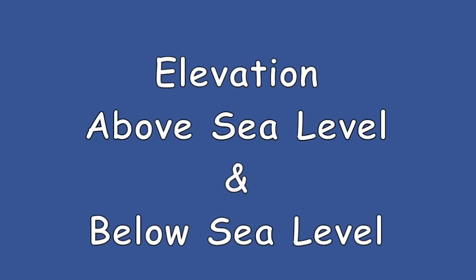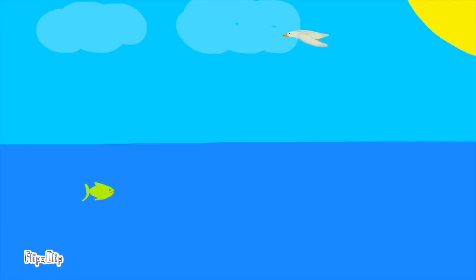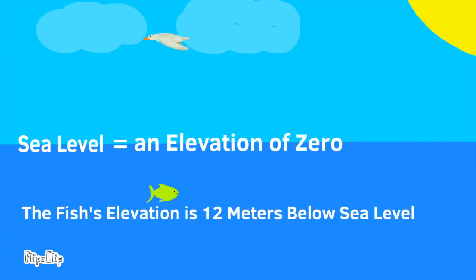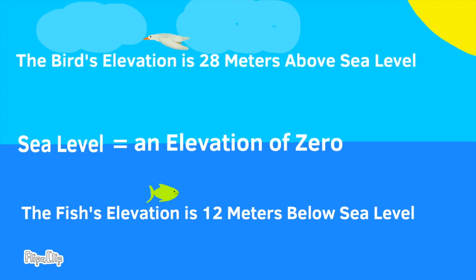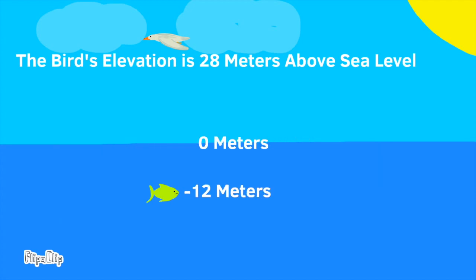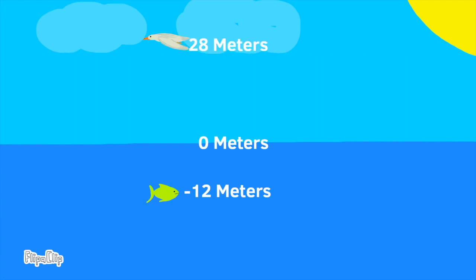Above sea level and below sea level. In this lesson, I'm using a fish and a bird. The fish's elevation is 12 meters below sea level, and the bird's elevation is 28 meters above sea level. The elevation of the fish is negative 12 meters, and the elevation of the bird is 28 meters.